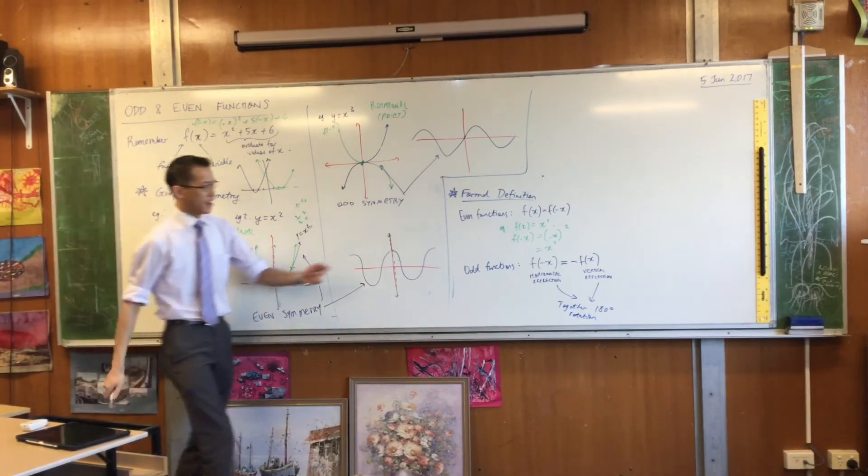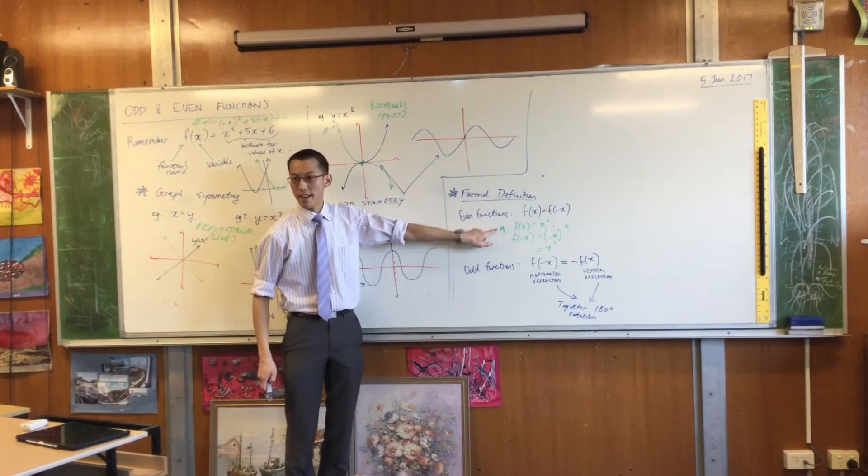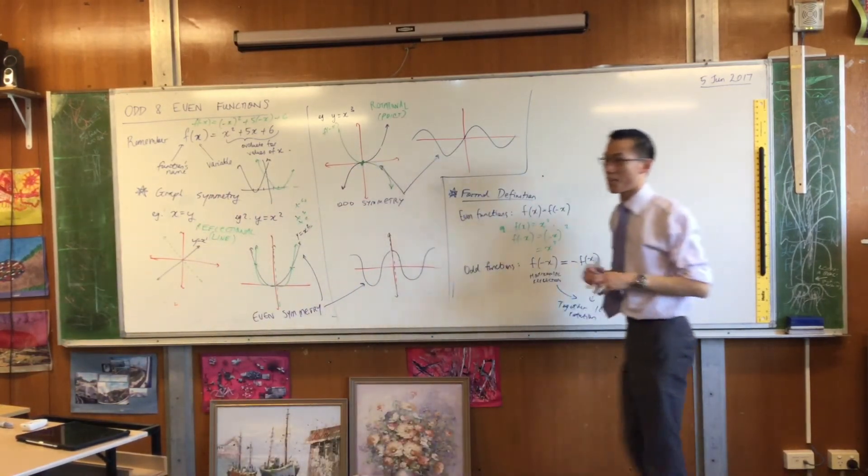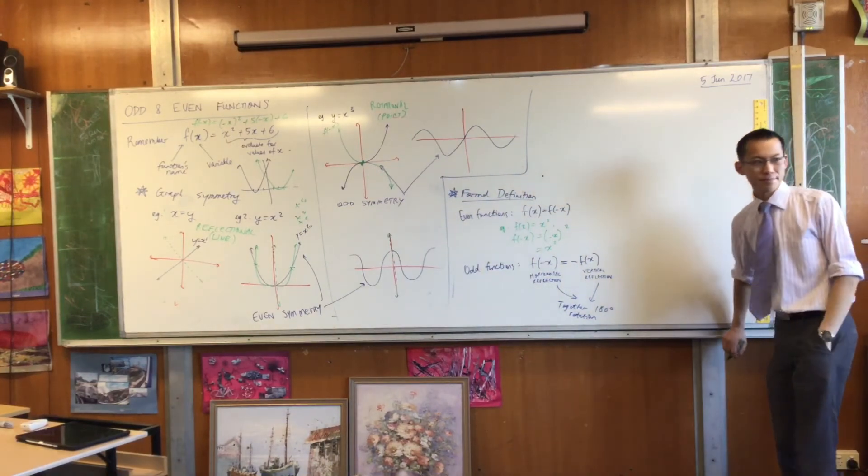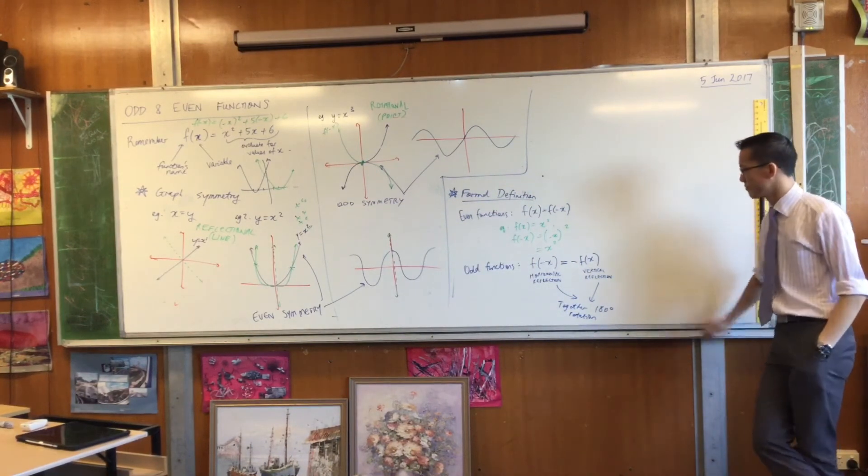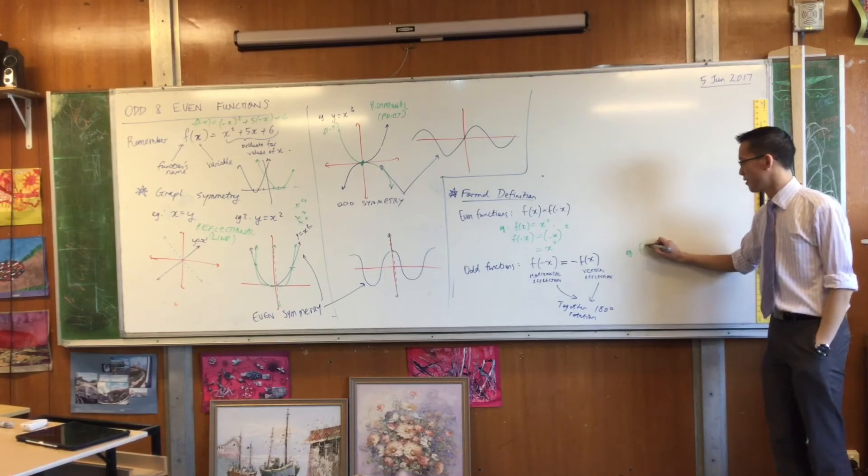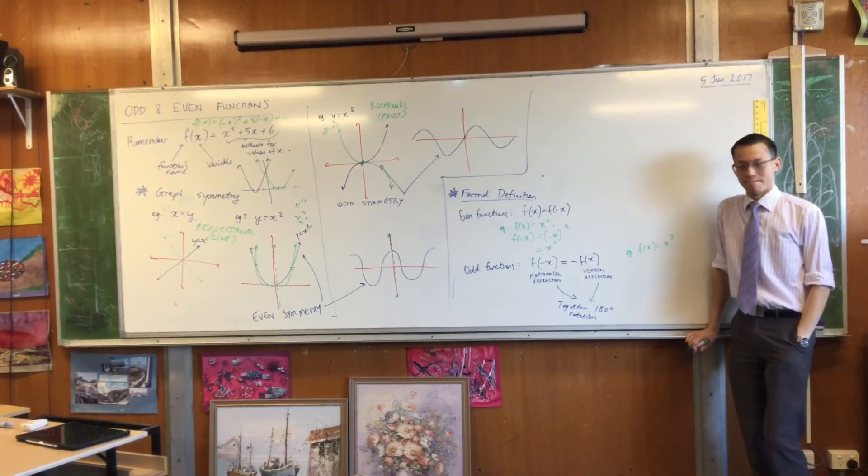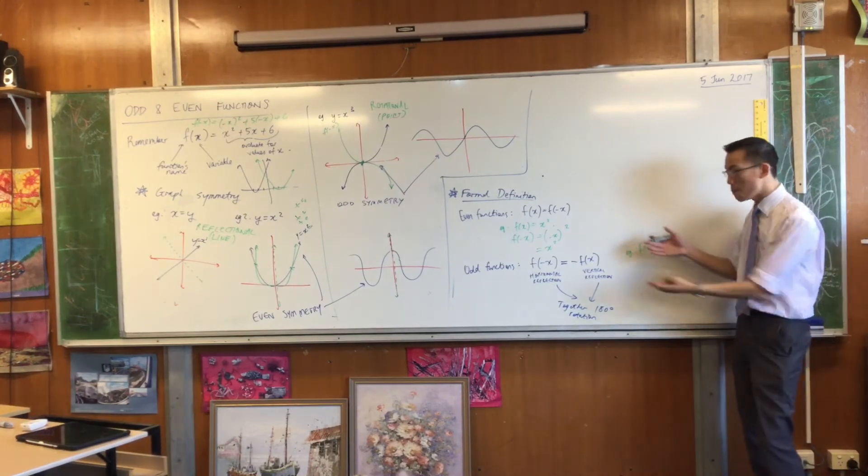So, can you see why we proved that x squared is an even function? How would we prove that, say, x cubed is an odd function? How would you do it? All you have to do is come back to this definition. That's why definitions are so important.